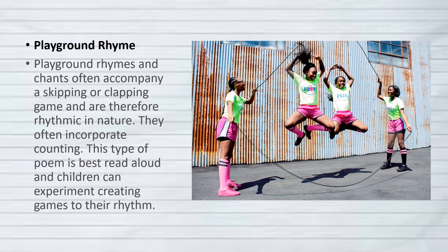Probably the first thing you ever learned was a playground rhyme. These rhymes and chants usually have a skipping or clapping tone that goes with them and are part of some game done at recess, and they often incorporate counting. This type of poem is absolutely designed to be said out loud because children can experiment with creating the rhythm. For example, you see these girls jumping double dutch ropes, and they'll be chanting or singing some song to help everybody keep their rhythm. And to go faster, they will say the rhyme faster so that everybody can stay in tune.